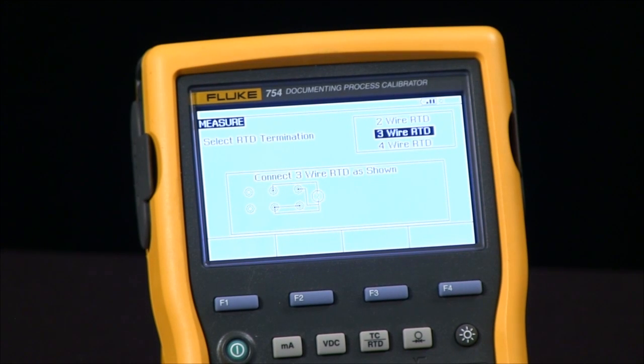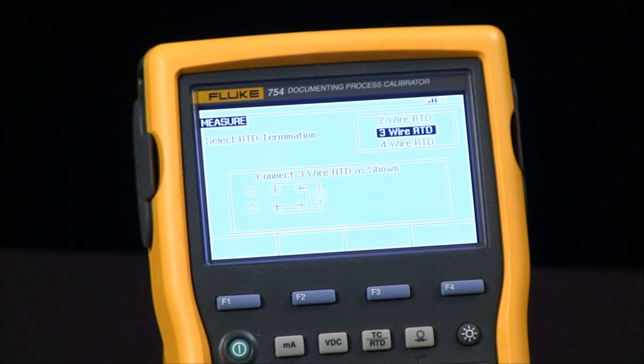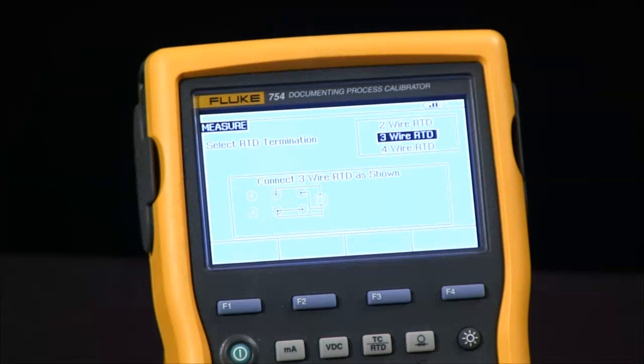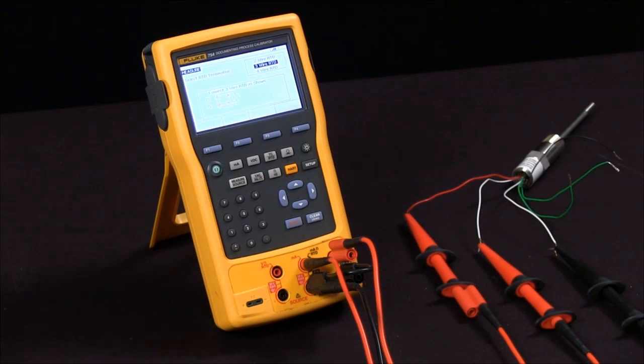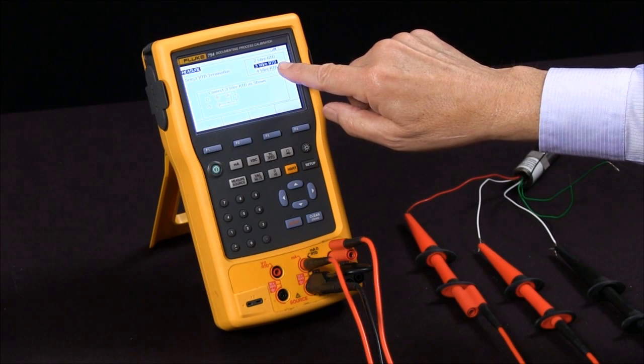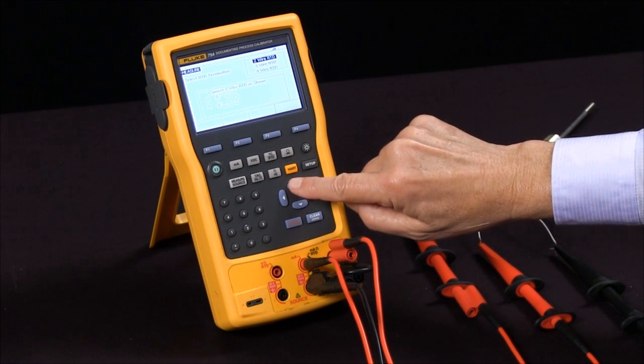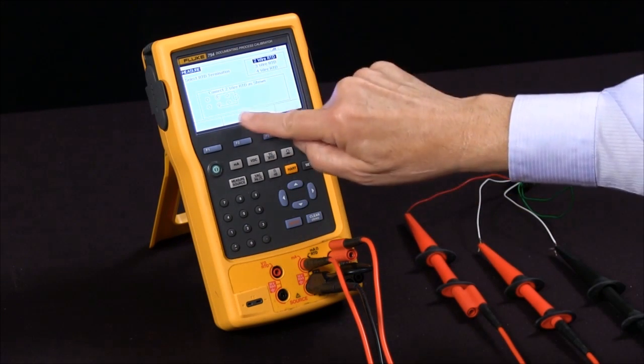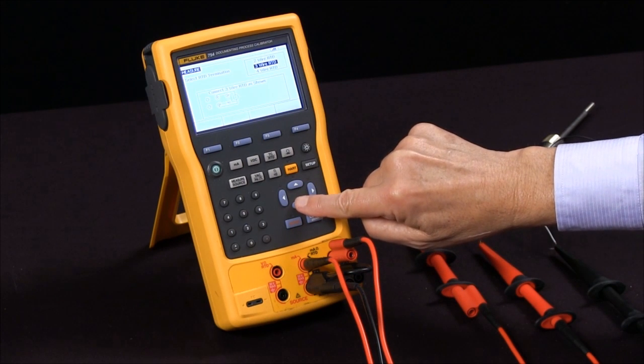Now we have the screen that shows us how to connect the 2, 3, or 4 wire RTDs. Right now we're highlighting 3 wire RTD. We can change that. We can look at 2 wire. It shows us how to connect 2 wire, 3 wire, or 4 wire.